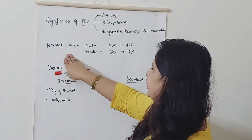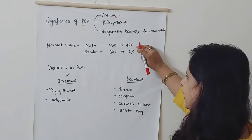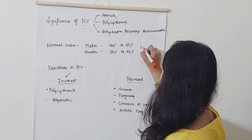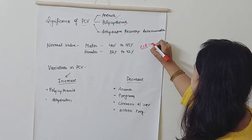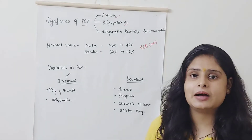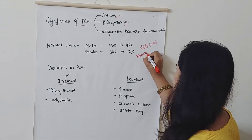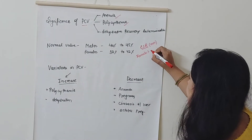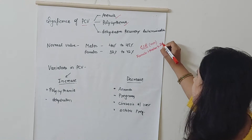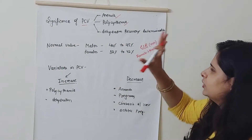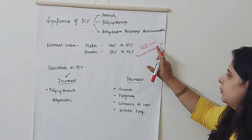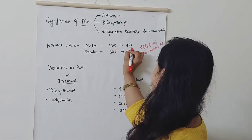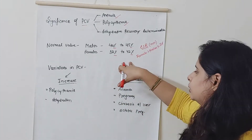Now, what are the normal values of PCV? In males it is 40 to 45 percent, and in females it is 38 to 42 percent. This is just the opposite of ESR. As we studied in ESR, females have the highest ESR because they have less blood, which causes the erythrocyte sedimentation rate to be highest in females, then males, then children. So remember, PCV is just the opposite of ESR. PCV is measured in percentage using a single tube, called the Vestidian tube.